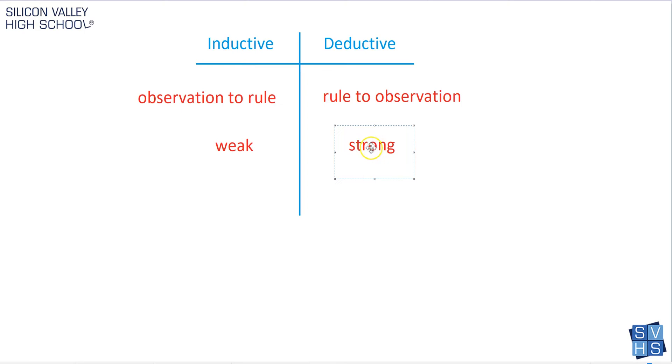And in geometry, when you're doing proofs, you're usually doing deductive reasoning. And you'll kind of understand this weak versus strong concept as I give examples.